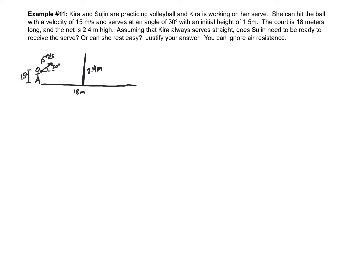Assuming that Kira always serves straight, does Suja need to be ready to receive the serve or can she rest easy? There are really two questions here: first, does the ball go over the net? If it doesn't, Suja doesn't have to do anything. Second, if the ball does go over the net, is it going to land in bounds? So we have two things to look at.